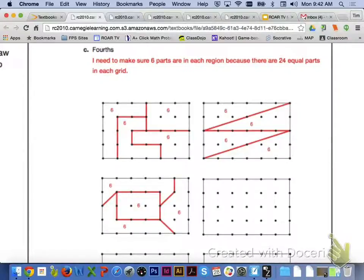For letter C, fourths, you need to make sure that you have six parts in each region, because there are 24 equal parts in each grid.